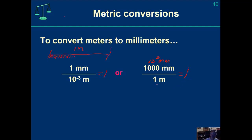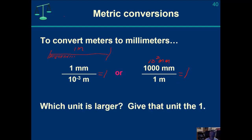There's an advantage to giving the larger unit the value of one. In this particular case, I don't need a negative exponent. I'm giving the larger unit the one, so I'll only have a positive exponent for the smaller unit. Millimeters is the smaller unit and meters is the larger unit. By giving the larger unit the one, I don't have to use a negative exponent.